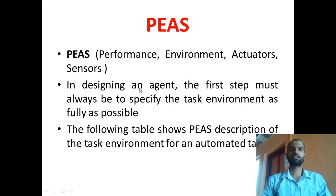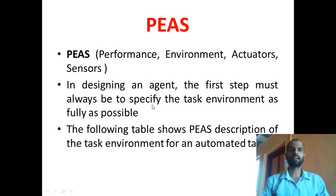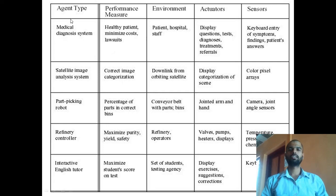That means the task environment should be fully observable — or we can say fully definable — so that the agent can perform the task in that particular environment. The following table shows the PEAS description. These are the agent types, meaning various agents performing tasks, and these columns represent PEAS: Performance Measure, Environment, Actuators, and Sensors.